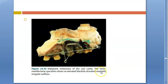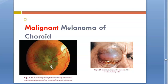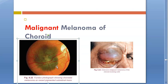It can affect the oral cavity also. And this is malignant melanoma of the choroid. If it is in the choroid, lymphatic drainage is very less so lymphatic spread is minimal, but hematogenous spread can occur.